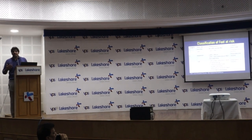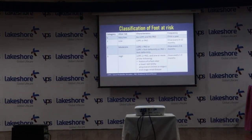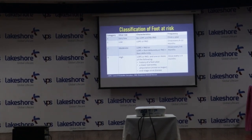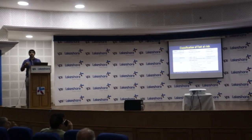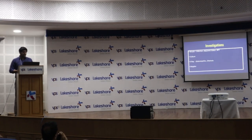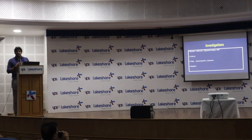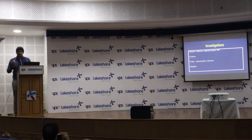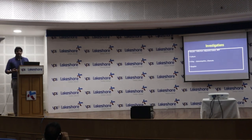After history and examination, classify the foot as high risk, moderate risk, low risk, or very low risk, and decide the frequency of follow-up accordingly. Basic investigations include blood tests for signs of infection, glycemic status, and renal status. Cultures should be taken. X-ray can be done for osteomyelitis or Charcot changes, followed by Doppler and other investigations.